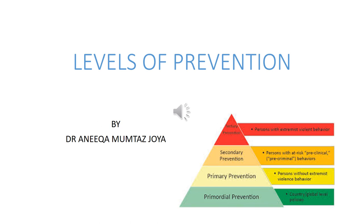As mentioned in the previous lecture about the natural history of disease, while applying preventive measures, it is not necessary to know everything about the natural history of the disease. We can start prevention before that as well. Sometimes removal or elimination of a single cause may be sufficient to prevent the disease. The objective of preventive medicine is to oppose the cause and thereby achieve disease prevention.